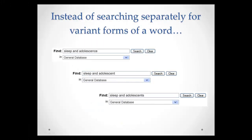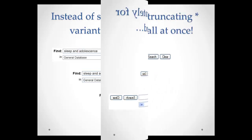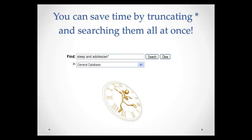Instead of searching separately for variant forms of a word, you can save time by truncating and searching them all at once.